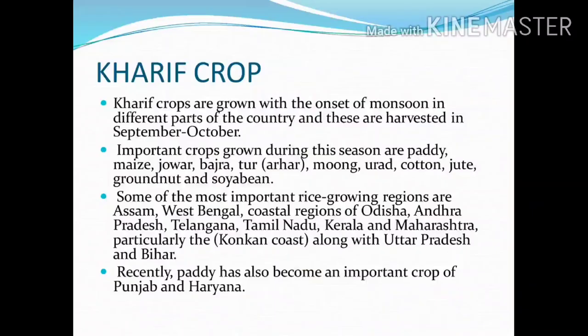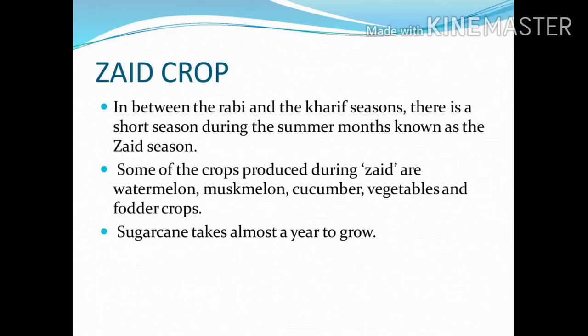In between the Rabi and the Kharif season, there is a short season during the summer months known as the Zaid season. Important crops grown are watermelon, muskmelon, cucumber, vegetables, and fodder crops.